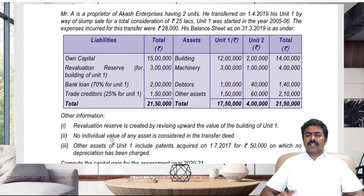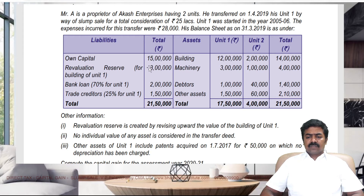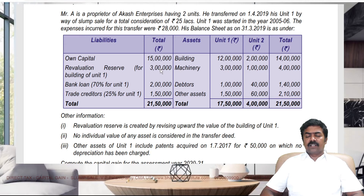Consider this problem. Mr. A, proprietor of Vakash Enterprises, has 2 units. He transferred Unit 1 on 1st April 2019 by way of slump sale for a consideration of 25 lakhs. Unit 1 was started in 2005-06, which is more than 15 years, so it will be long-term capital gain. Expense incurred can be adjusted. Sale consideration minus expenses on sale gives net sale consideration. We are in financial year 2019-20, assessment year 2020-21. Opening balance sheet is given. For building in Unit 1, we take 12 lakhs minus 3 lakhs revaluation reserve — so 9 lakhs is the book value. Machinery, debtors, and other assets at book value.